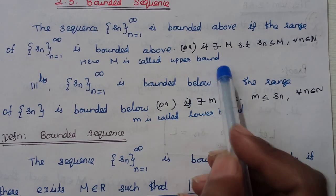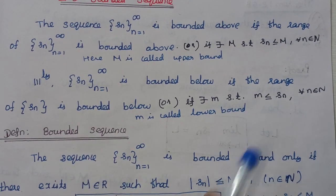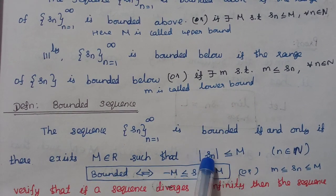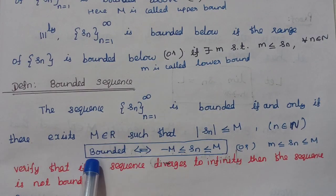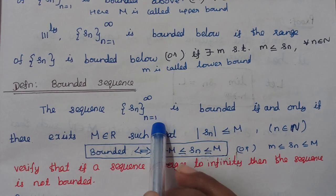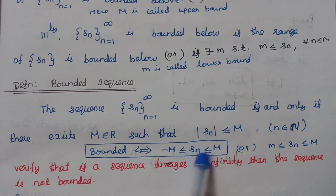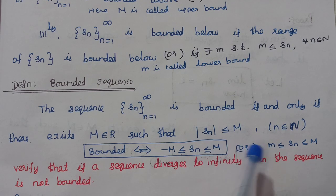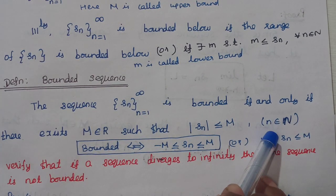If a sequence is both bounded above and bounded below, the sequence is bounded. The definition is: the sequence {Sn} is bounded if and only if there exists M ∈ ℝ such that |Sn| ≤ M for every n ∈ ℕ. This means -M ≤ Sn ≤ M, where M is the upper bound and -M is the lower bound.